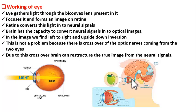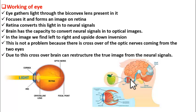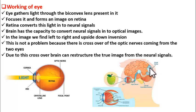We already know that the retina is made up of rods and cones. These rods and cones convert this image information into electrical signals and send this information to the visual region of the brain. This information is carried in the form of electrical signals, or we can say neural signals, to the brain. The brain then reconverts that information back into optical information, and then we start perceiving the object.